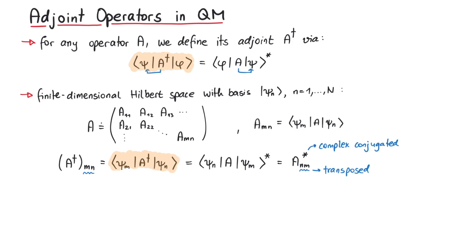Another question might be, what's the adjoint of the product of two operators, AB? Well, since we just found out that in matrix notation, A dagger corresponds to taking the transpose and complex conjugating the matrix, we can use linear algebra to arrive at the result B dagger, A dagger.